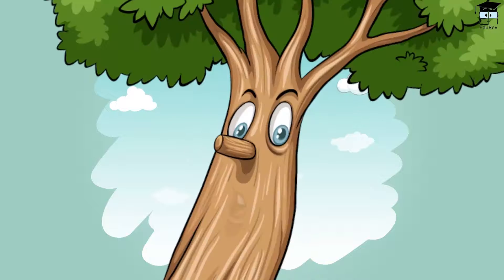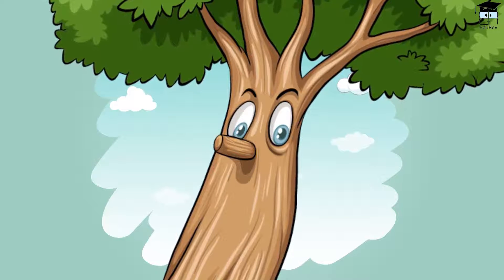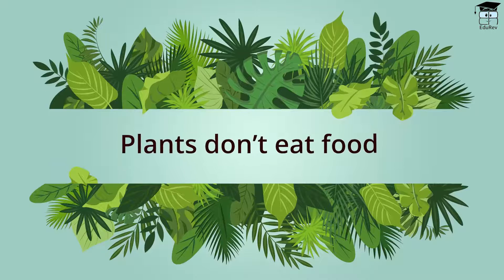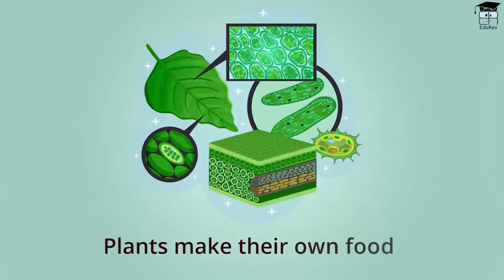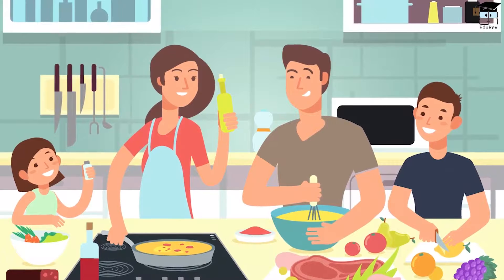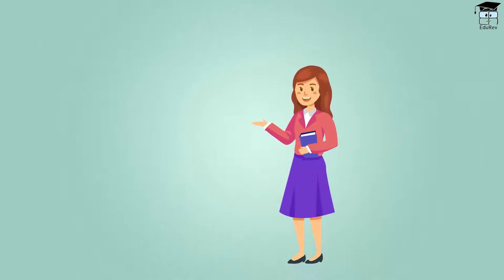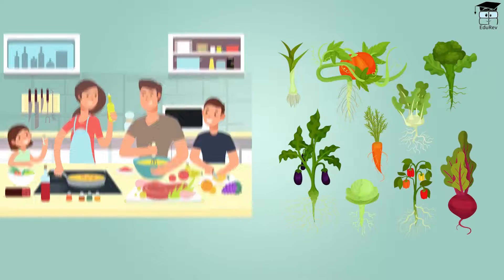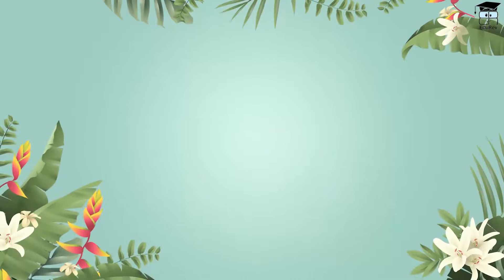We know that all living beings eat food, but what about plants or trees? They don't have a mouth to eat food. Well, plants don't eat food — they make their own food. You might think that we also make our own food, but let me correct that: we just cook our food.